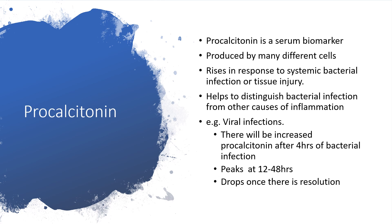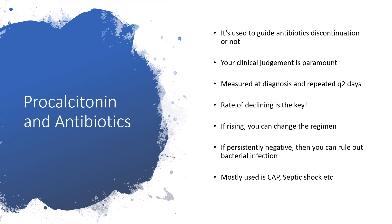It drops once there is resolution. Once we've administered our antibiotics and the antibiotics have done what we want them to do, the level of procalcitonin will drop. Procalcitonin is pretty useful when we are administering antibiotics in the face of bacterial infection. It is used to guide antibiotic discontinuation or not — in other words, whether we are going to change your regimen or continue with what we are doing right now, the level of procalcitonin will be a good guide.